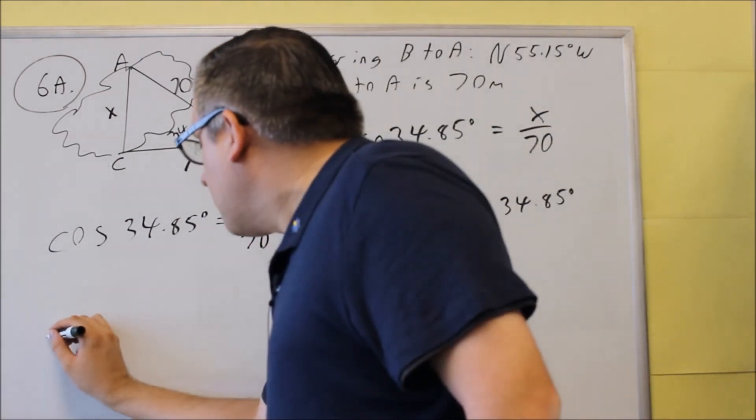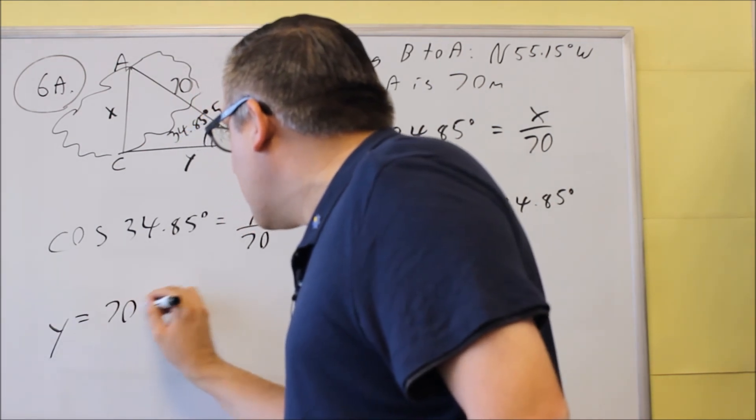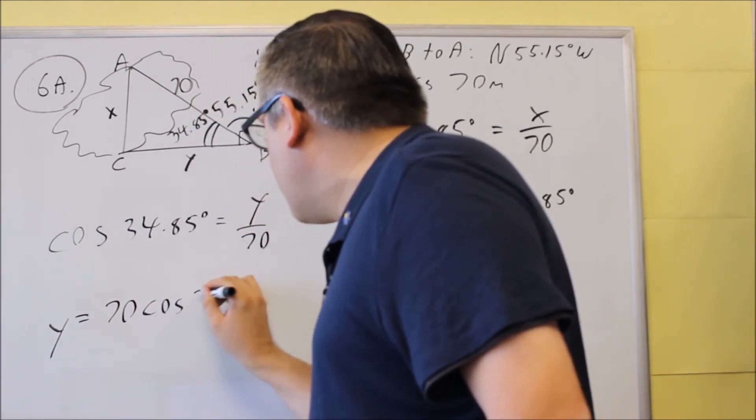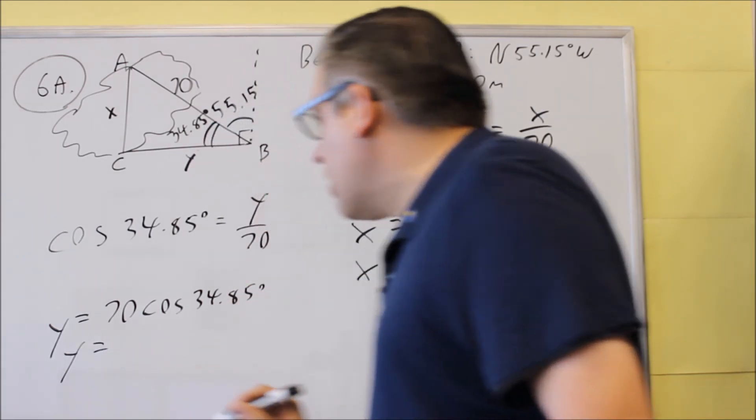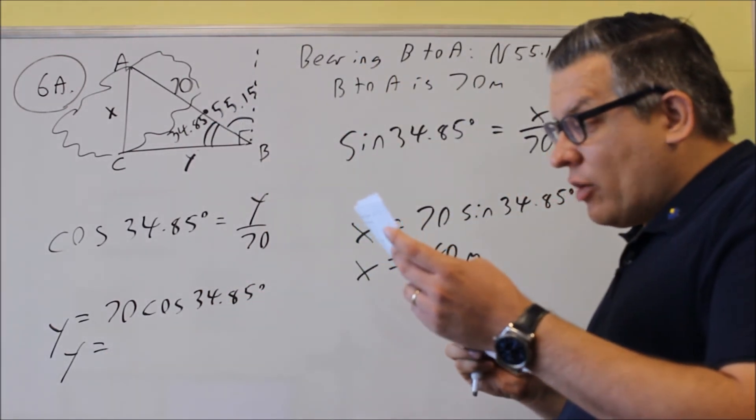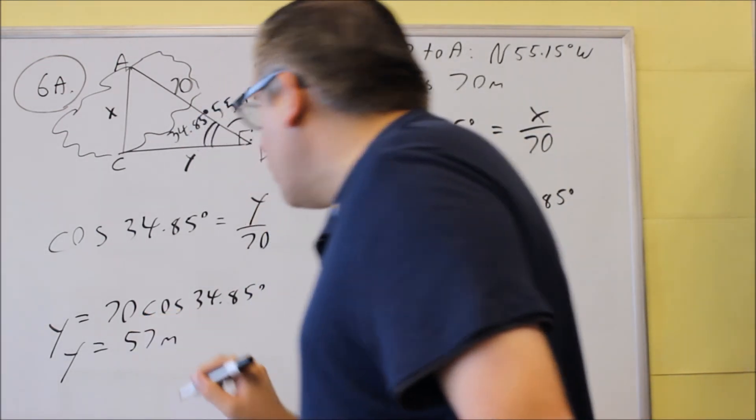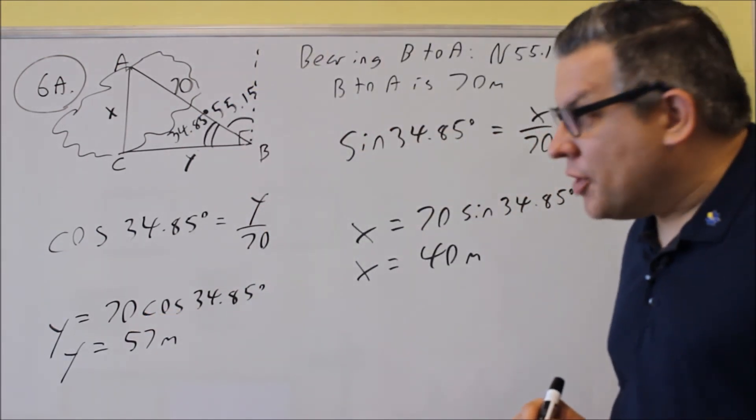We're going to cross multiply. And we get Y is equal to 70 cosine 34.85. And then when we punch that into the calculator for that one, we're going to get, again, round to the nearest whole number. We get 57 meters.